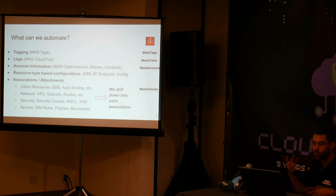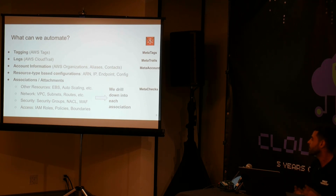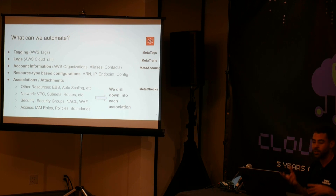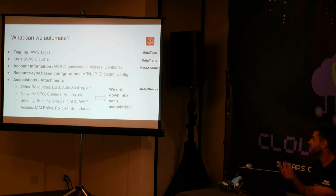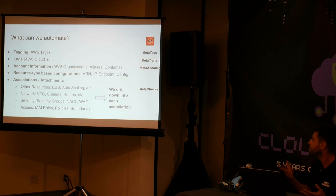These associated resources could be at the network layer — like the VPC where the resource is running, the subnets, the routes. At the security layer — like a security group attached to the affected resource, maybe a network ACL. At the access layer — like IAM roles, policies, maybe permission boundaries.